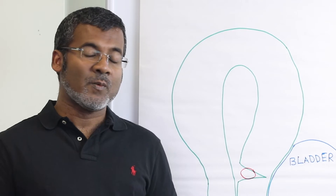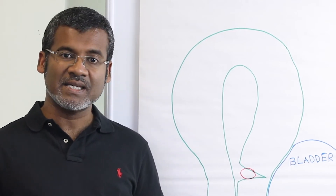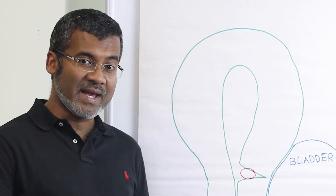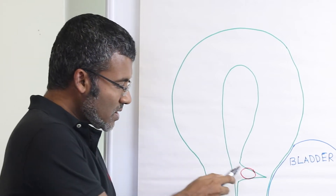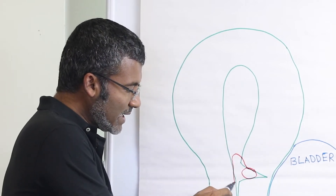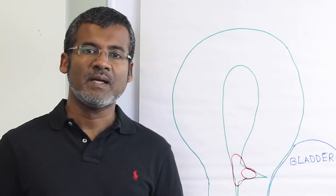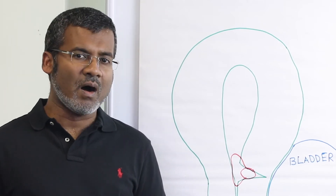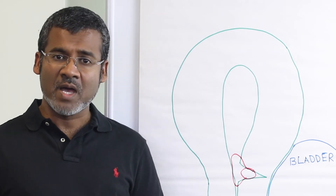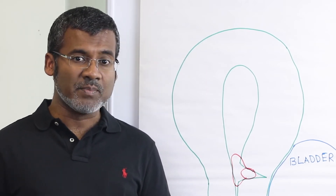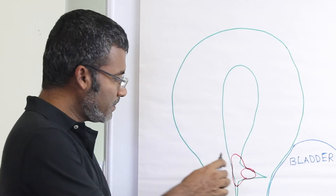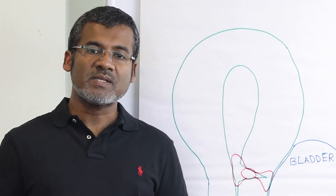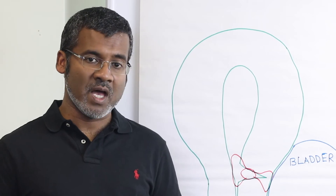Question number four: what are the two types of Caesarean scar pregnancy and what is the prognosis with each type? The first type progresses into the uterine cavity as the sac grows. This can reach a viable gestational age and even live birth, but the risks are morbidly adherent placenta, massive hemorrhage, and hysterectomy. The second type goes the other way, towards the bladder. The risks here are uterine rupture and massive hemorrhage.